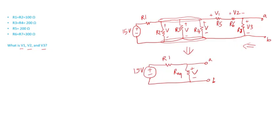Let's go through this example. I'm going to call R equivalent 1, which is the sum of resistances R5, R6, and R7, because they are in series. That's just 800 ohms.